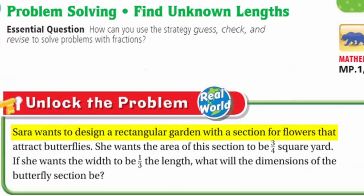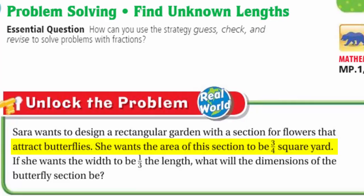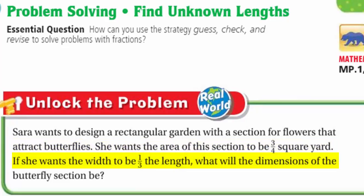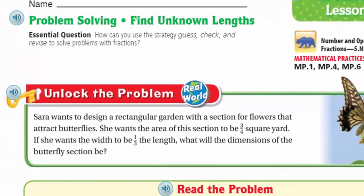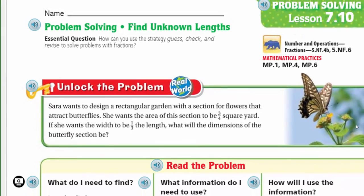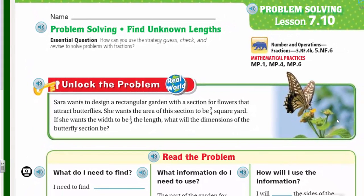It says Sarah wants to design a rectangular garden with a section for flowers that attract butterflies. She wants the area of this section to be three-quarter square yard. If she wants the width to be one-third the length, what will the dimensions of the butterfly section be? My head is spinning! First, let's think about what we know about the area of a rectangle and the length. If you know the area of a rectangle and the length, can you find the width?